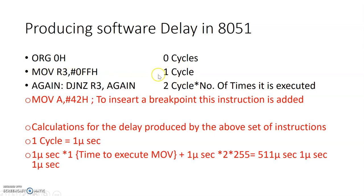One cycle means one machine cycle. Evaluating this instruction, the 8051 takes one machine cycle, and one machine cycle equals one microsecond. The microcontroller works on an oscillator; the oscillator frequency is normally 12 MHz. One machine cycle requires 12 oscillator clock pulses, so the frequency of one machine cycle is 12MHz/12 = 1 MHz, and the time period is one microsecond.